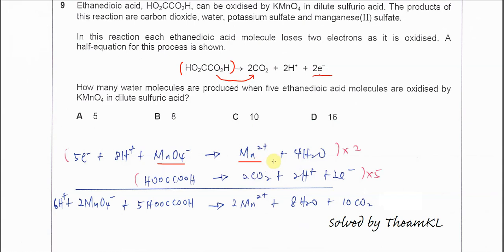After that you need to balance the oxygen number. Here oxygen number is 4, so on the other side you have to add 4 H2O to balance oxygen number.